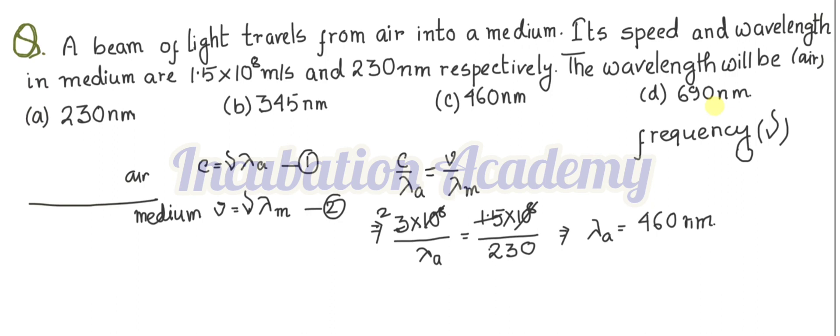Since frequency must remain the same, as the wavelength is reduced to half, the velocity is also reduced to half. When the velocity is 3 into 10 to the power 8 meter per second, the wavelength is 460 nanometer. When the velocity becomes 1.5 into 10 to the power 8, the wavelength reduces to 230 nanometer — maintaining the same frequency as light enters from one medium to another. So the answer is 460 nanometer, and option C is correct. Thank you.